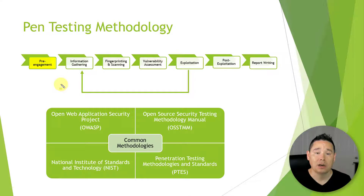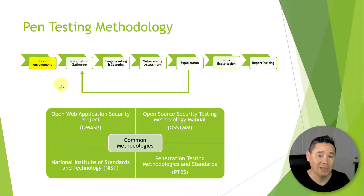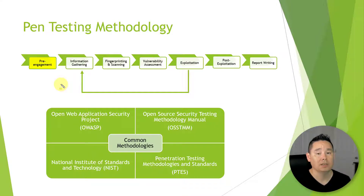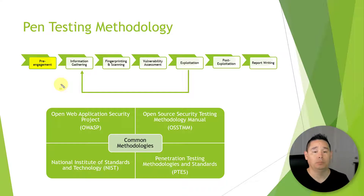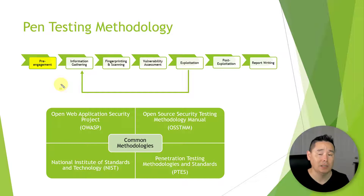All those different things are going to be part of the pre-engagement, such as non-disclosure agreements where you sign off saying you will not disclose any information learned about the company and network to anybody. When it comes to vulnerability assessments and pen testing engagements, it can range from white box — where they give you pretty much the blueprints and all the details of their network — to gray box, where they give you some details, to black box, where they give you no details whatsoever.